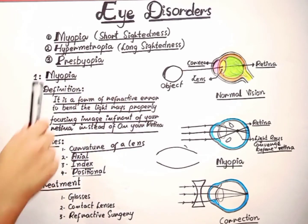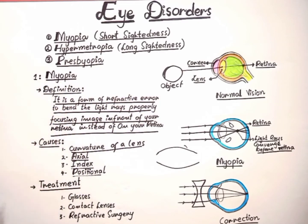So let's discuss myopia, near or short sightedness. Myopia is a common condition in which you can see near objects clearly, but distant objects cannot be seen properly and they appear blurry.